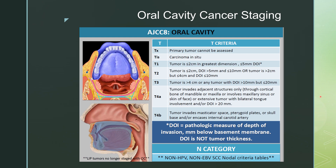Here's the newest AJCC oral cavity cancer staging. It is based on size of the tumor — from less than two centimeters to greater than four centimeters — but it also includes a pathologic staging of less than or equal to five millimeters depth of invasion on pathology. At tumor board we can use depth of invasion to include in the staging. The highest grade tumor invades into the masticator space, the pterygoid plates, or the skull base, and/or encases the internal carotid artery. This is for non-HPV, non-EBV squamous cell cancers.